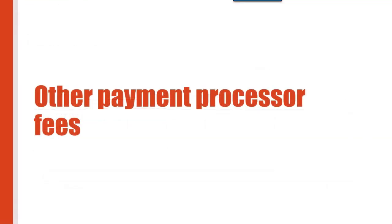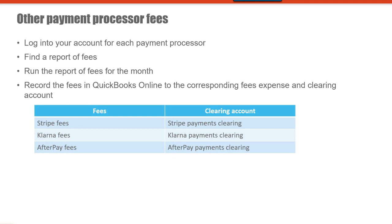For other payment processor fees, log into your account for each payment processor, find the report of fees, run the report of fees for the month, and record the fees in QuickBooks Online to the corresponding fees expense and clearing accounts. For example, if you're using Stripe, for the fees account you'll use Stripe fees, and for the clearing account you'll use Stripe payments clearing. For Klarna, use Klarna fees and Klarna payments clearing. Or Afterpay fees and Afterpay payments clearing.